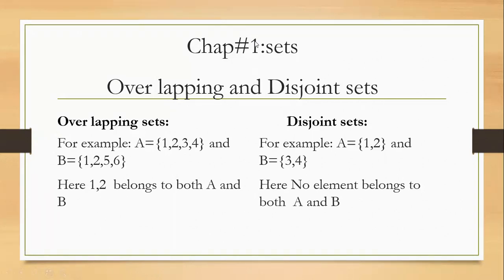Here you can see that, for example, A contains the elements 1, 2, 3, 4 and B contains the elements 1, 2, 5, 6. These two sets are given in tabular form. In these two sets, the common elements are 1 and 2. Common elements means these elements are present in both set A and set B. These types of sets are called overlapping sets.